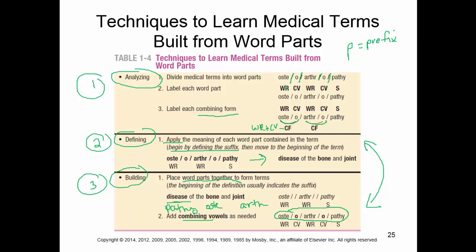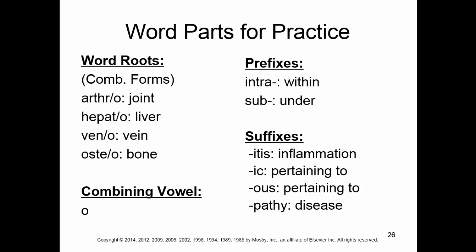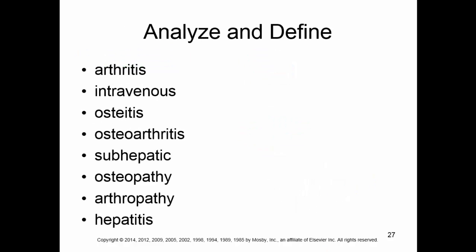We're going to get lots of practice — we're really just learning the basic processes here. Word parts for practice: the word roots and combining forms — arthro is joint, hepato is liver, veno is vein, osteo is bone, and the combining vowel is O. The prefixes we need to be familiar with are: intra, which is 'within,' and sub, which is 'under.' Suffixes are: -itis for inflammation, -ic and -us mean the same thing — pertaining to — and -pathy is disease.